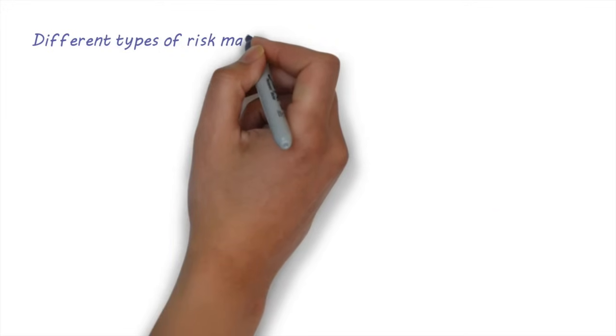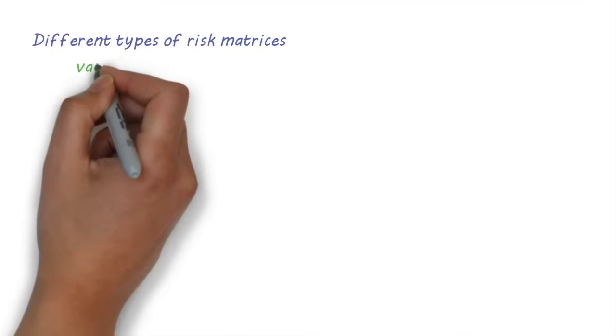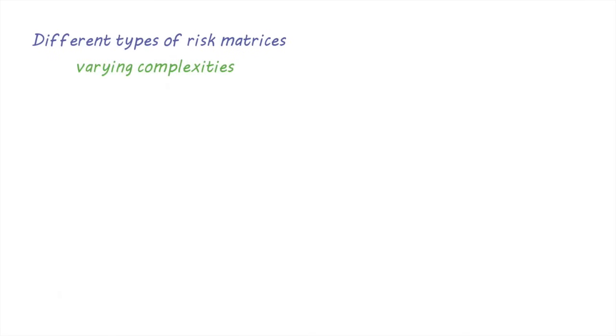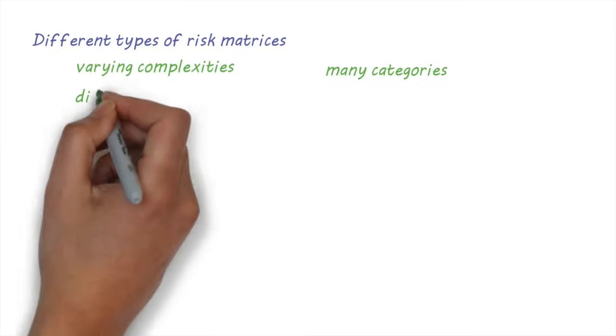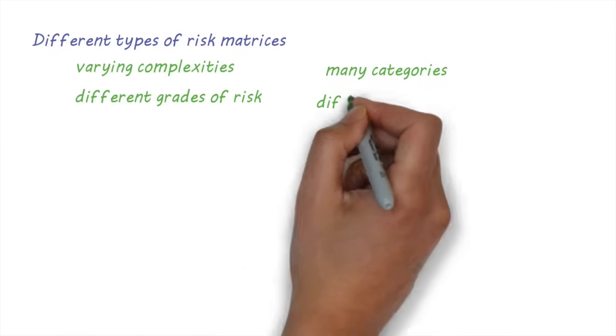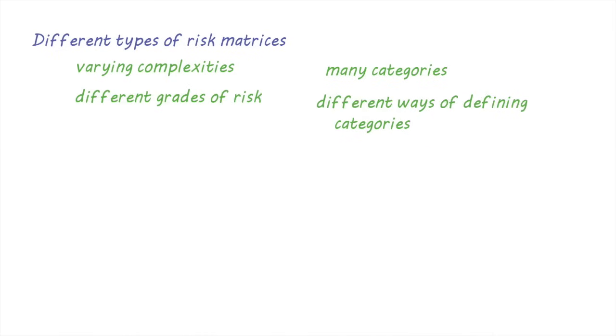There are many different types of matrices in use with varying degrees of complexity. They can have many categories and different grades of risk. They may also have different ways of defining categories of likelihood and consequence.